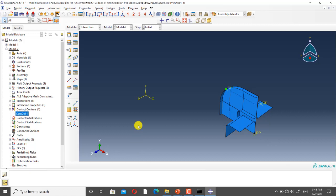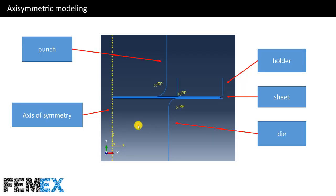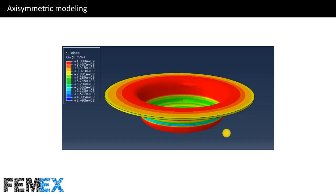If the geometry of the process has an axis of symmetry, and all the other physical conditions including loading, interaction, and boundary conditions have the same axis of symmetry, you can model the process in the axisymmetric space. Here I have modeled the process in the axisymmetric space. This is the axis of symmetry, this is the punch, this is the blank holder, this is the die, and this is the blank or sheet.